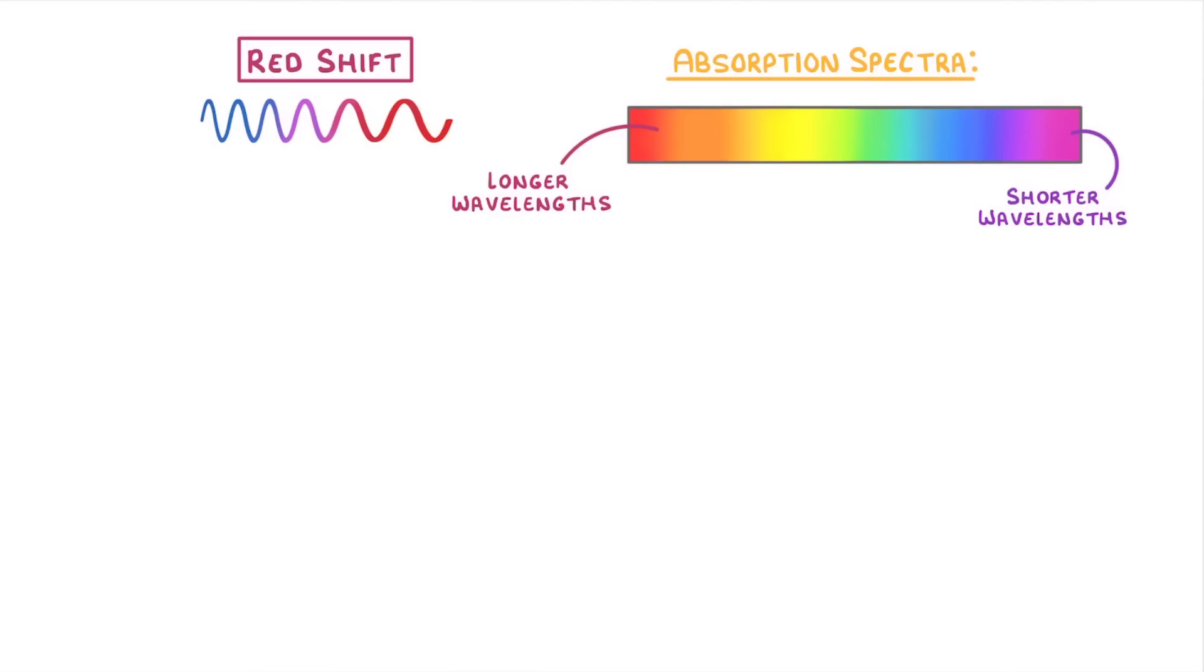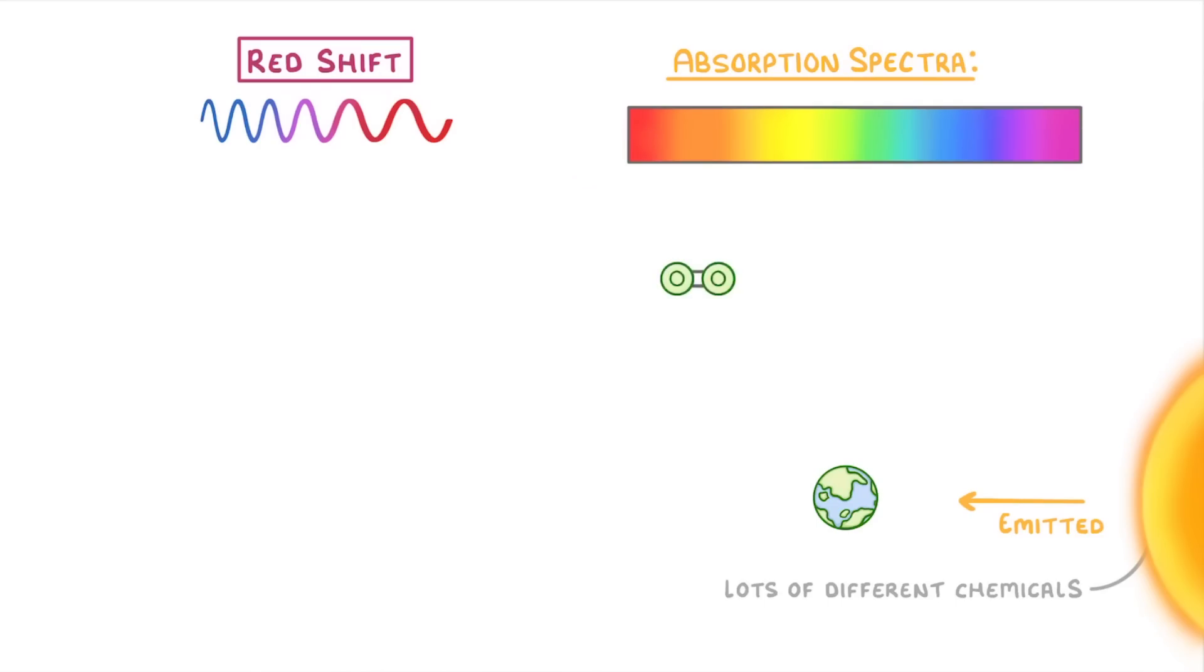Now, all of the wavelengths here are emitted from the sun towards Earth. But the sun's atmosphere contains lots of different chemicals, and some of them can absorb certain wavelengths of light. For example, oxygen molecules might have absorbed these wavelengths, hydrogen might have absorbed these ones, and various other chemicals will have absorbed other ones as well.